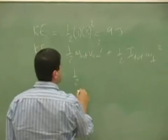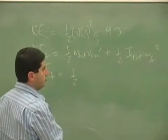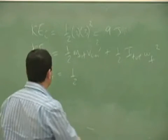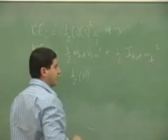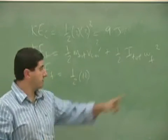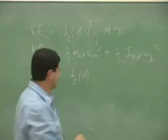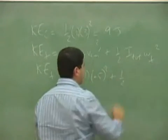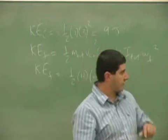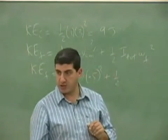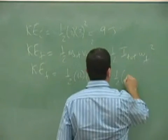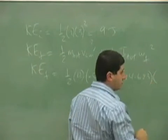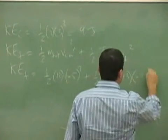So, mass total is 2 plus 10, right? That's 12 times the center of mass prime squared. So, that's 0.5 squared plus half times I total. And then I wrote I total down over there as 14.683 and then times omega final, which was 0.31 squared. All right.